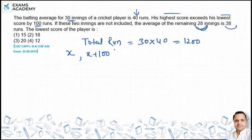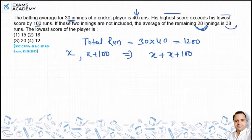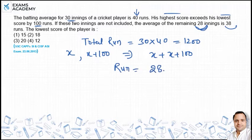These are the two innings — x and x plus 100. The remaining innings are 28. So 28 innings times 38 equals 1064.